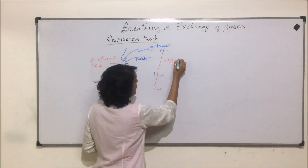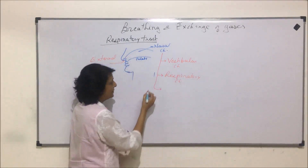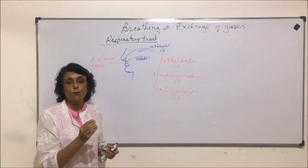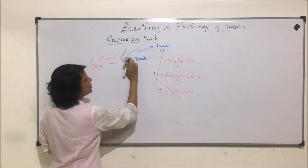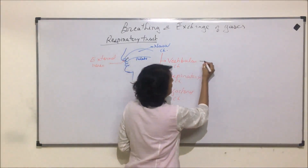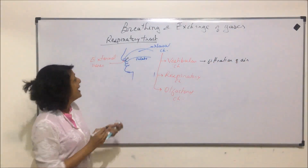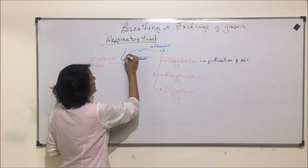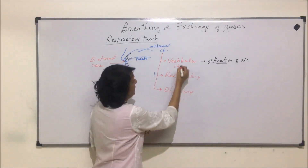The three parts are: first, the vestibular chamber; second, the respiratory chamber; and third, the olfactory chamber. The vestibule is the first place we land when entering — so the first part is called the vestibular chamber. Its function is filtration of air, because it is lined with mucus membrane and hair, which filter the air.